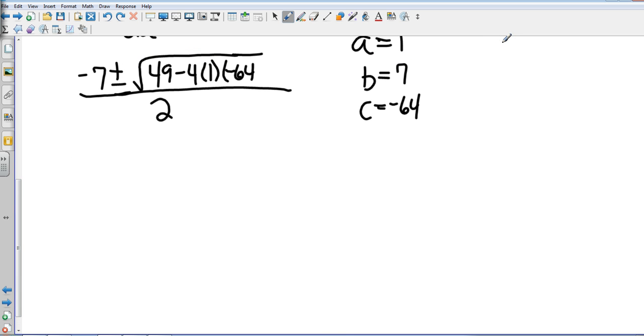So now I've got negative 7 plus or minus square root of 49, and that's going to be a negative times a negative, which is a positive. 64 times 2 is 128, times 2 is going to be 256.